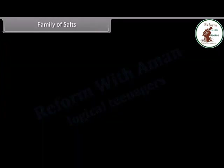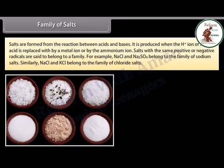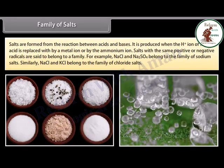Family of salts: salts are formed from the reaction between acids and bases. A salt is produced when the H+ ion of the acid is replaced by a metal ion, by the aluminum ion, or by the ammonium ion. Salts with the same positive or negative radicals belong to a family. For example, NaCl and Na2SO4 belong to the family of sodium salts; similarly, NaCl and KCl belong to the family of chloride salts.